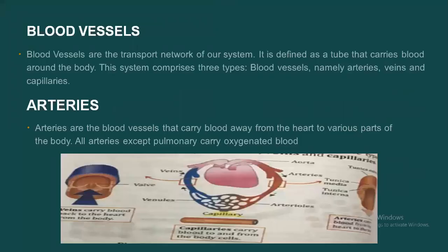Now we are coming on to our second topic, blood vessels. Blood vessels are the transport network of our body system. A vessel is defined as a hollow tube that carries blood around the body. In the human body, these work as a system of channels through which blood can flow. The system comprises three types of blood vessels: arteries, veins, and capillaries.